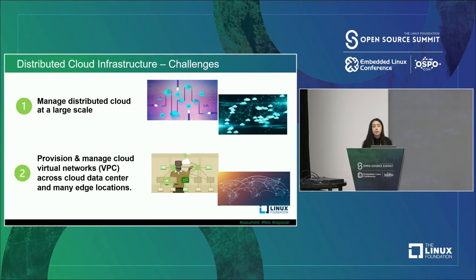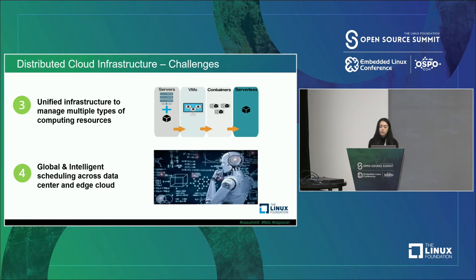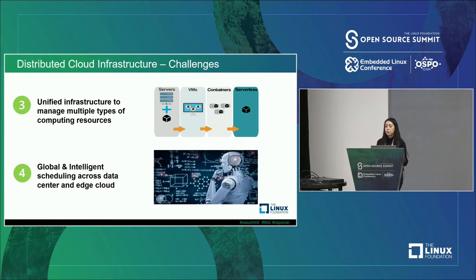It's very challenging given edge locations that have different quality of network and different network bandwidth. Additionally, cloud infrastructure needs to support more types of resources and workloads. It would be really helpful for cloud providers to have a unified platform to manage multiple types of computing resources, such as VM containers, serverless, and bare metal — and it's proven to be very challenging to have a unified stack to manage all these computing resources together.